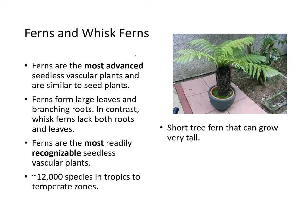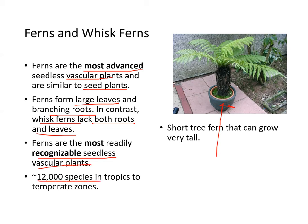Ferns are the most advanced seedless vascular plants and are similar to seed plants. They form large leaves and branching roots. In contrast, whisk ferns lack both roots and leaves. Ferns are the most readily recognizable seedless vascular plants, with about 12,000 species from the tropics to temperate zones.